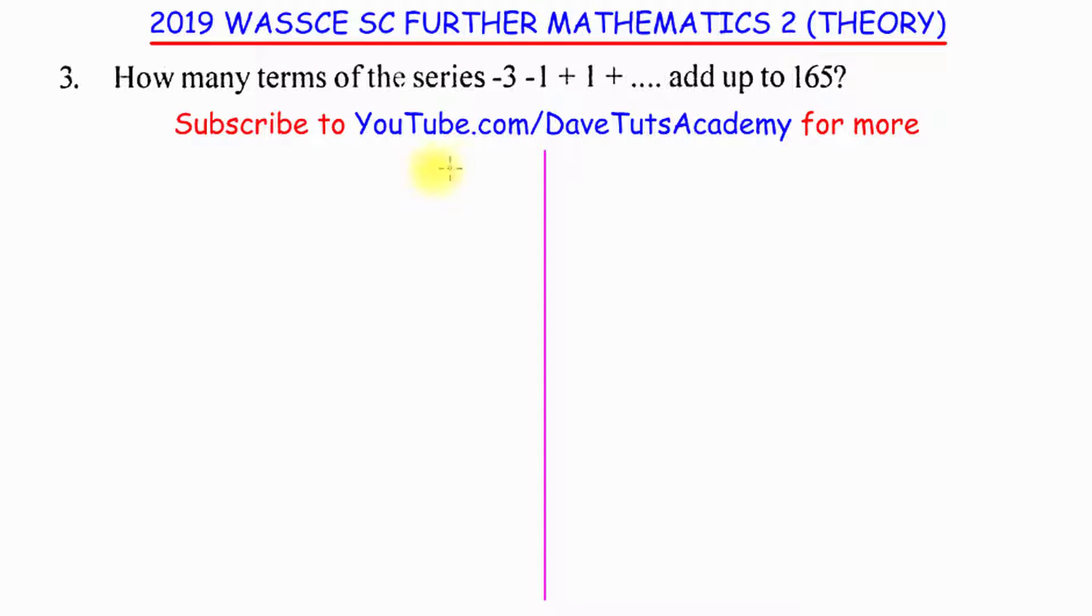To look at this question holistically, we need to notice that we are being given the set of values of this particular series as minus 3, then minus 1, then plus 1. And if we look at this, we need to get the next set of entries and if we add up everything, the sum will be 165.